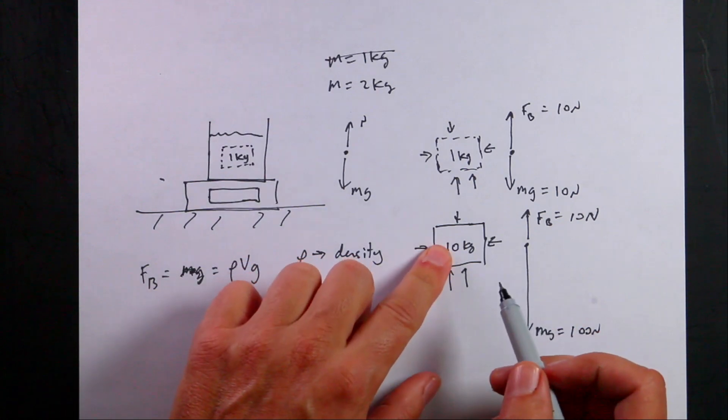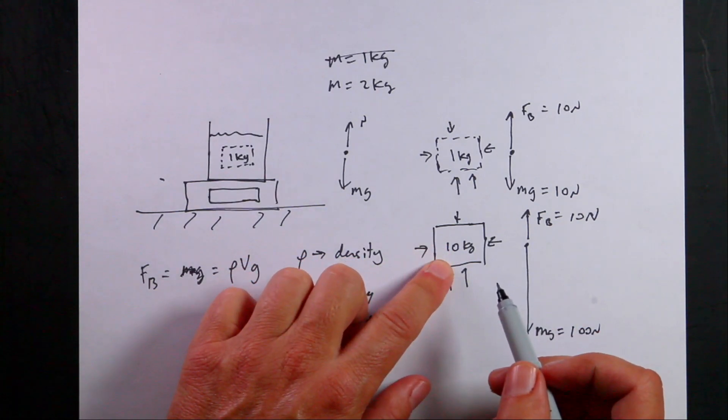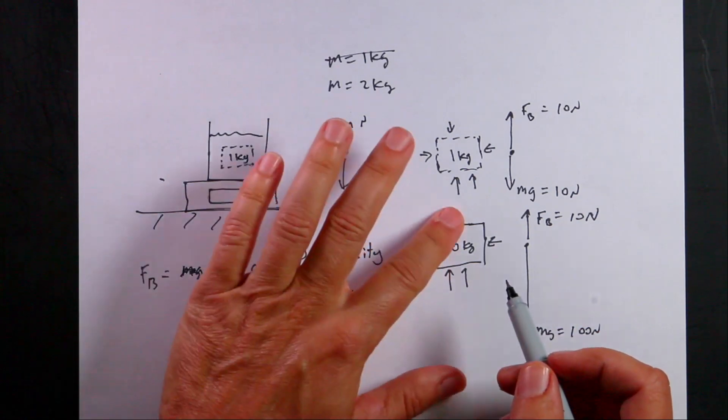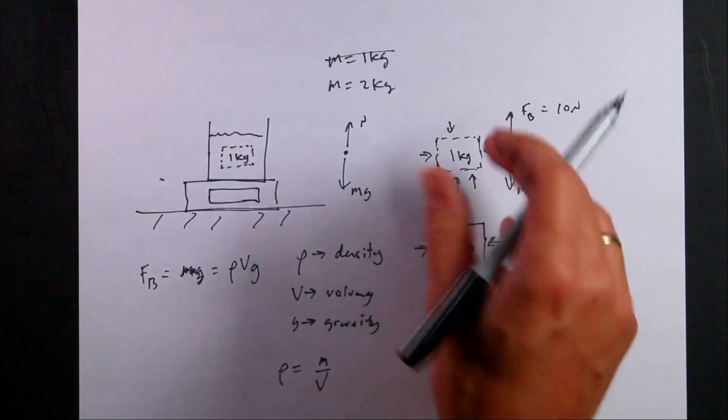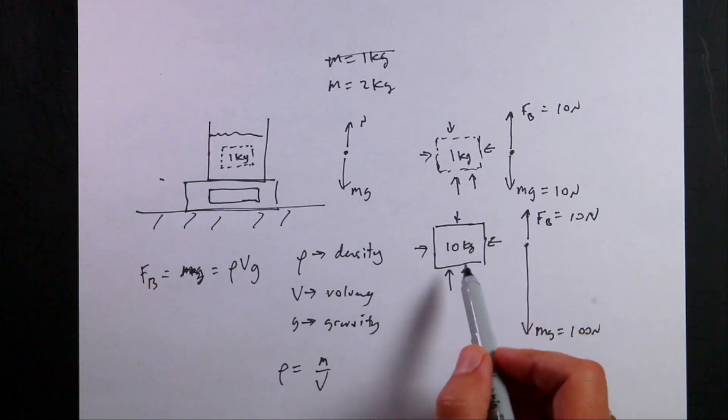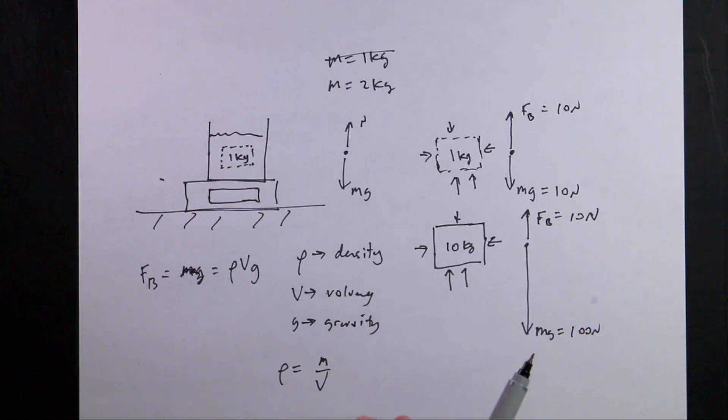In this case, this 10 kilogram block would not float, it would sink, because it would accelerate down. Then there would be another force, a viscous drag force, because it's now moving through the water. But the important thing is it's not just going to stay there because the weight is greater than the buoyancy force.